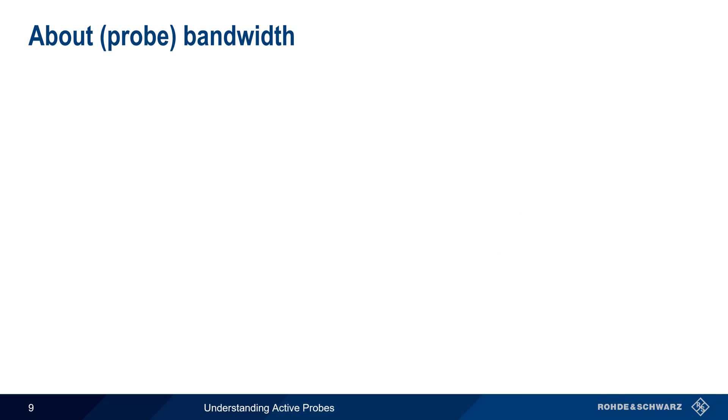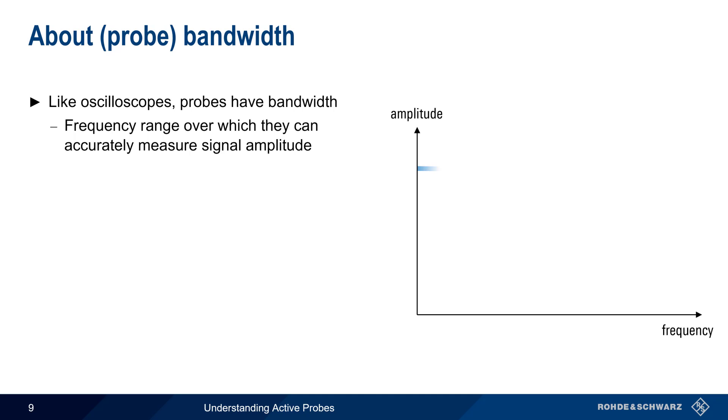The next topic is bandwidth, more specifically probe bandwidth. Like oscilloscopes, probes also have a bandwidth, which is the frequency range over which the probe can accurately measure signal amplitude. This is usually defined as the frequency at which the measured amplitude is 3 dB lower than the actual signal amplitude.